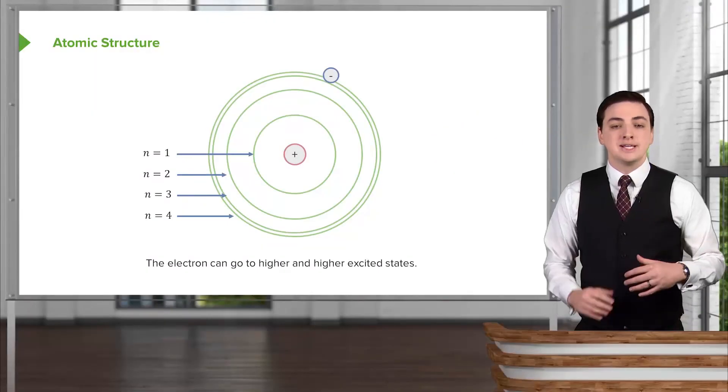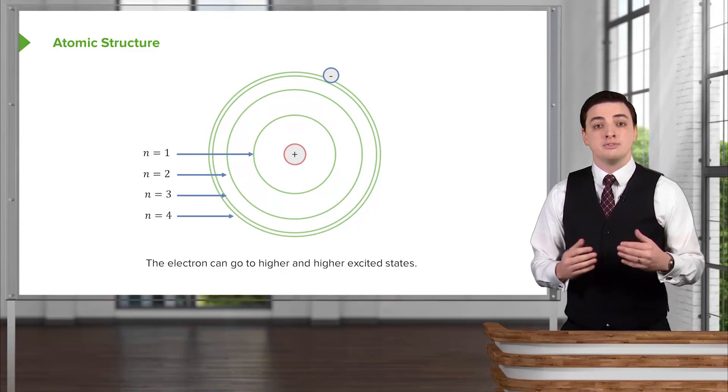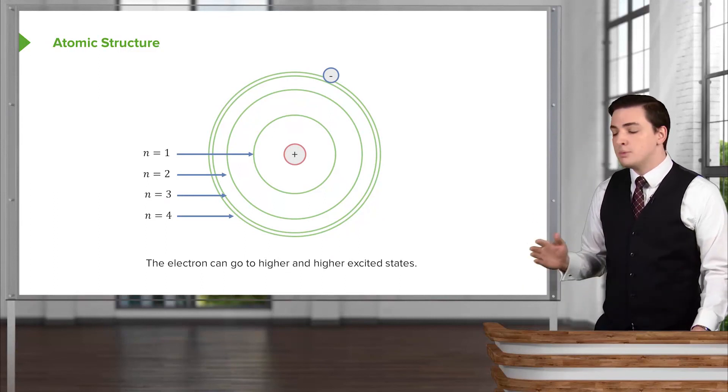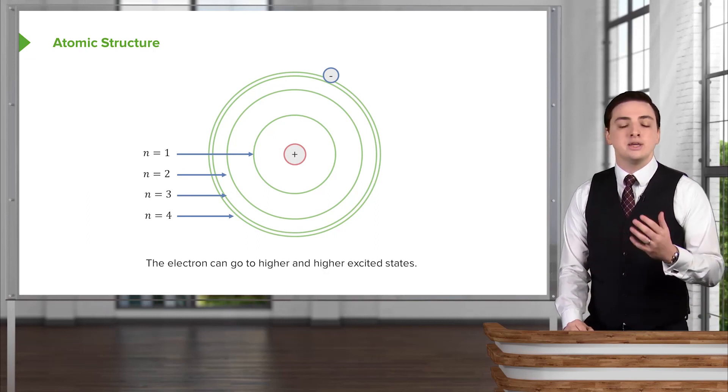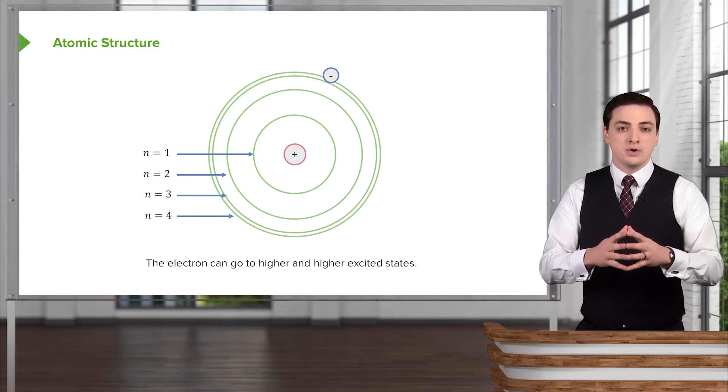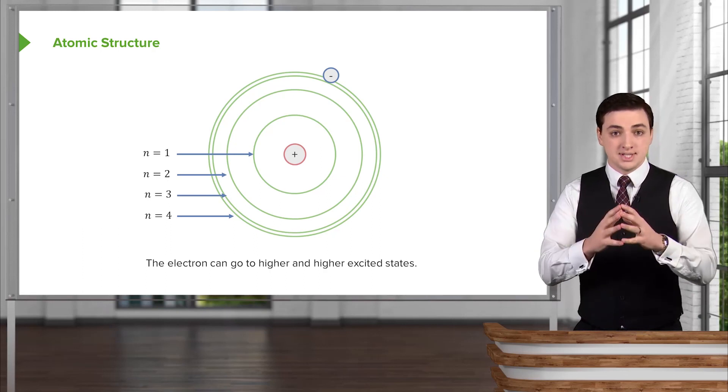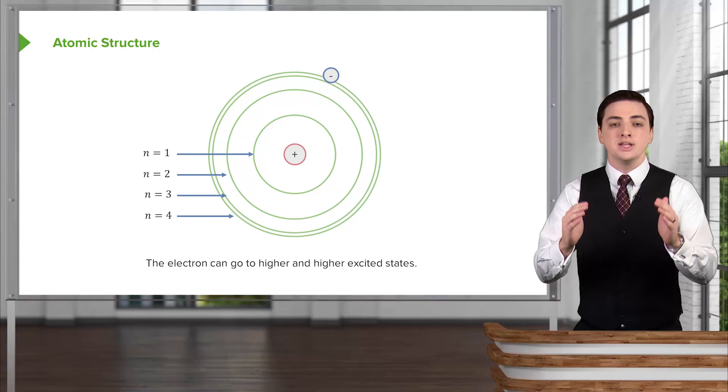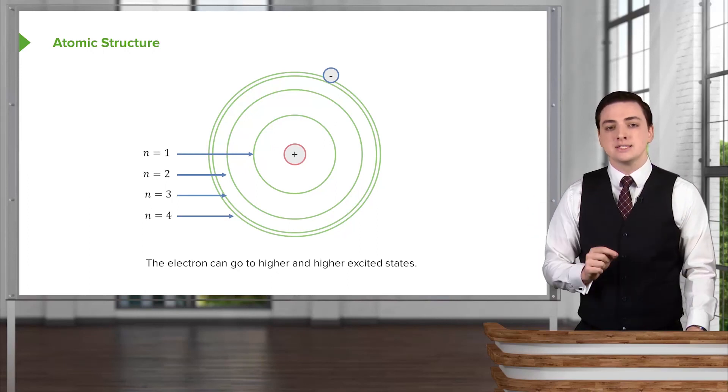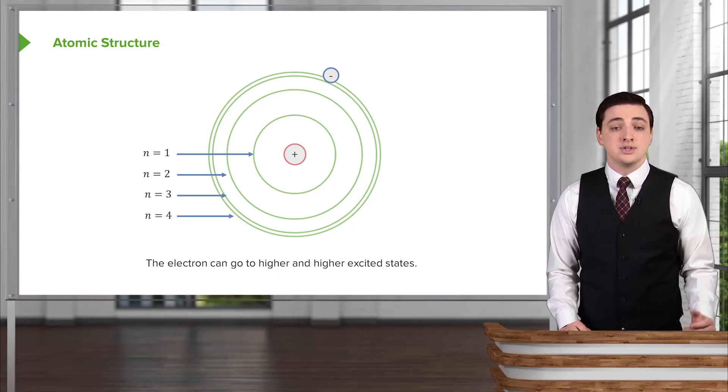This atomic structure can keep going. We've only showed so far the first and second energy levels, but we could in principle go to higher and higher energy levels, and they would look something like this. They're not equally spaced. You can see that going from the center of the atom to the ground state, we have one radius, one distance. And then as we go further and further up, these distances decrease from one energy level to the next.